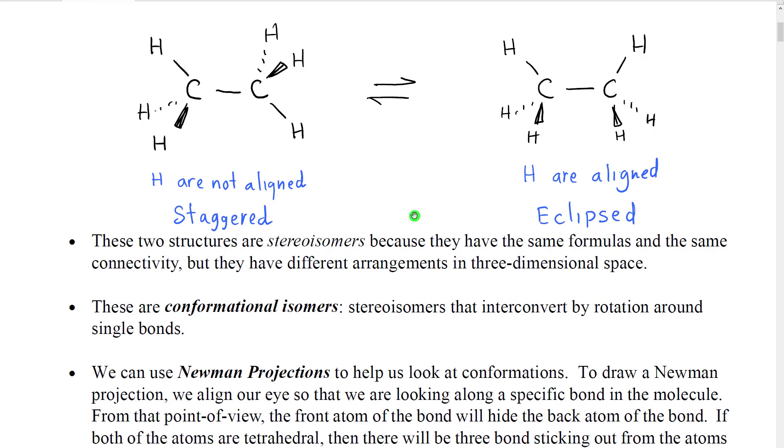So we call these conformational isomers. Conformational isomers are isomers that interconvert by rotating around single bonds.